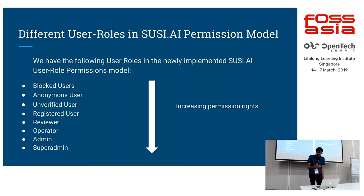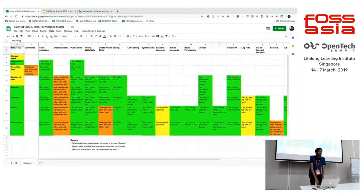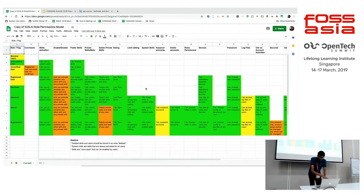These next two slides come from a spreadsheet. Since the spreadsheet was quite long, I couldn't fit it into one slide. On the top row we have the various features, and on the leftmost column we have the different user roles. This spreadsheet was our roadmap to implement the new user role model for SUSI. It basically lets us figure out what features and limitations apply to each user role.